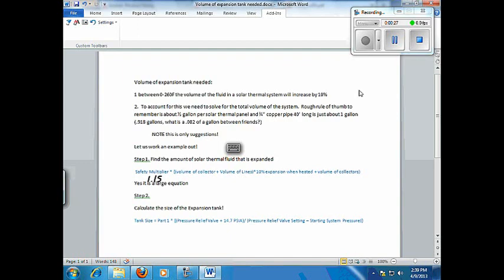They give us a few parameters. Their first parameter is 1.15, which means we have a 15% overflow increase of our system. We're going to multiply that by the volume of the collector, which in this case is going to be five collectors multiplied by a half a gallon each. In this MREA solar site assessment example, there were five collectors on the roof.